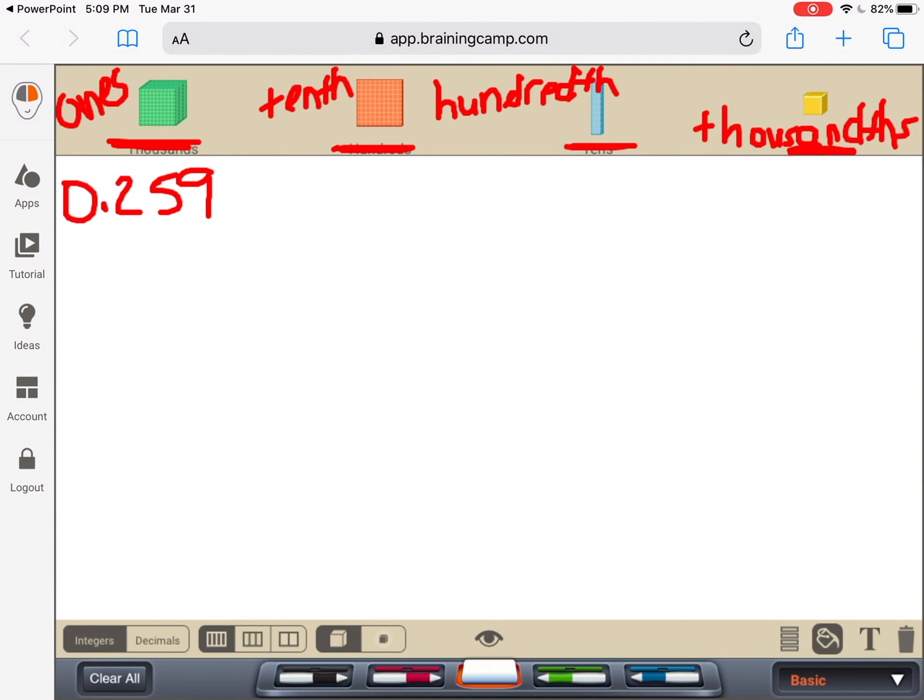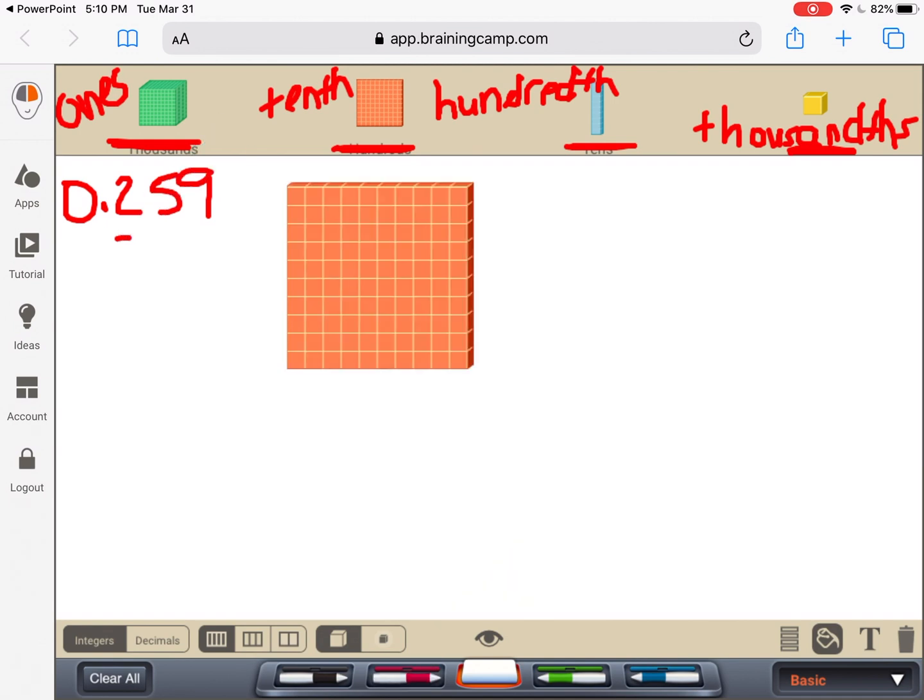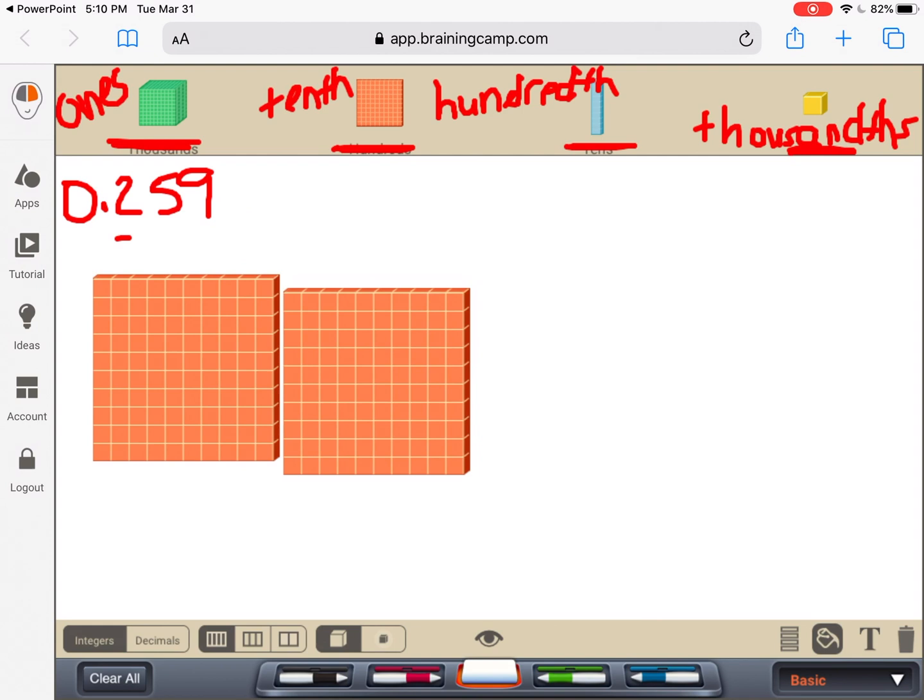Okay. So now we're ready. Okay. So what we're going to do is we are going to try to figure out how do we use our blocks to round to the nearest tenth. Well, let's represent the number first. So if it has 0.259, that means it doesn't have any wholes, but it does have how many tenths? So how many tenths does it say? It says it has two. So we need two of these. So we've got our two tenths.